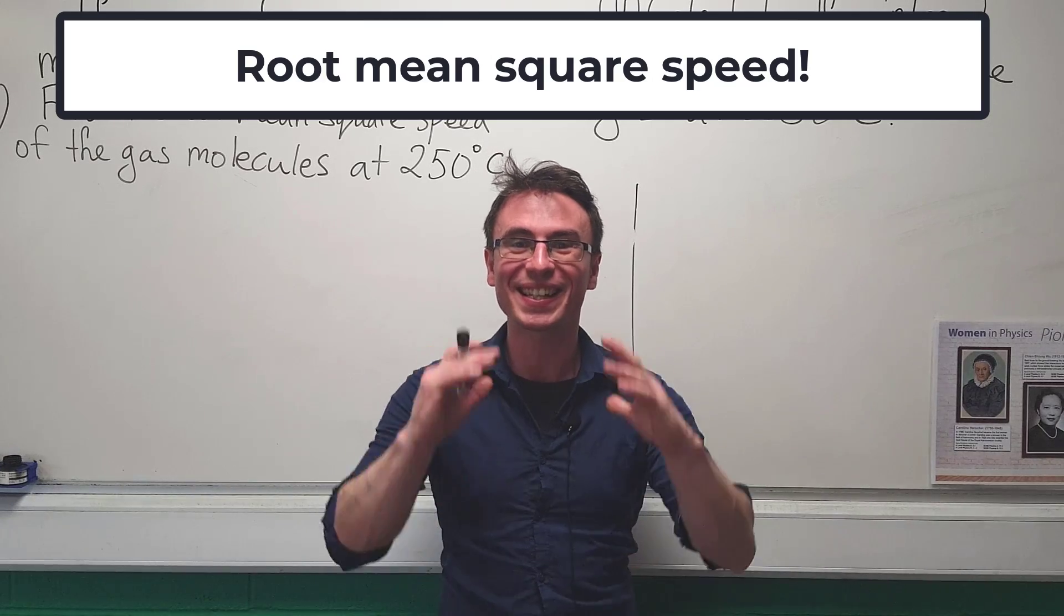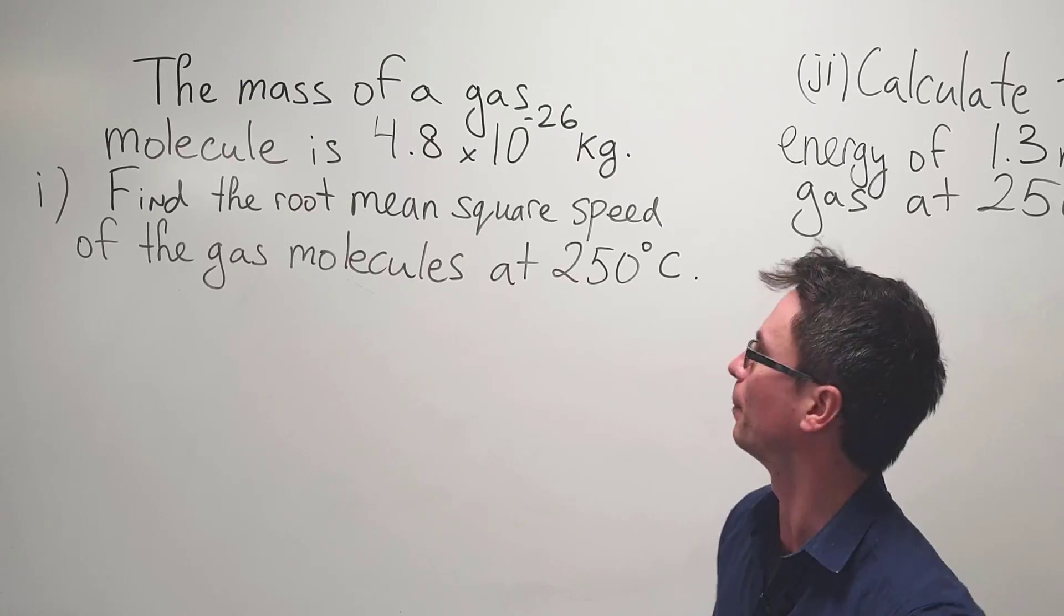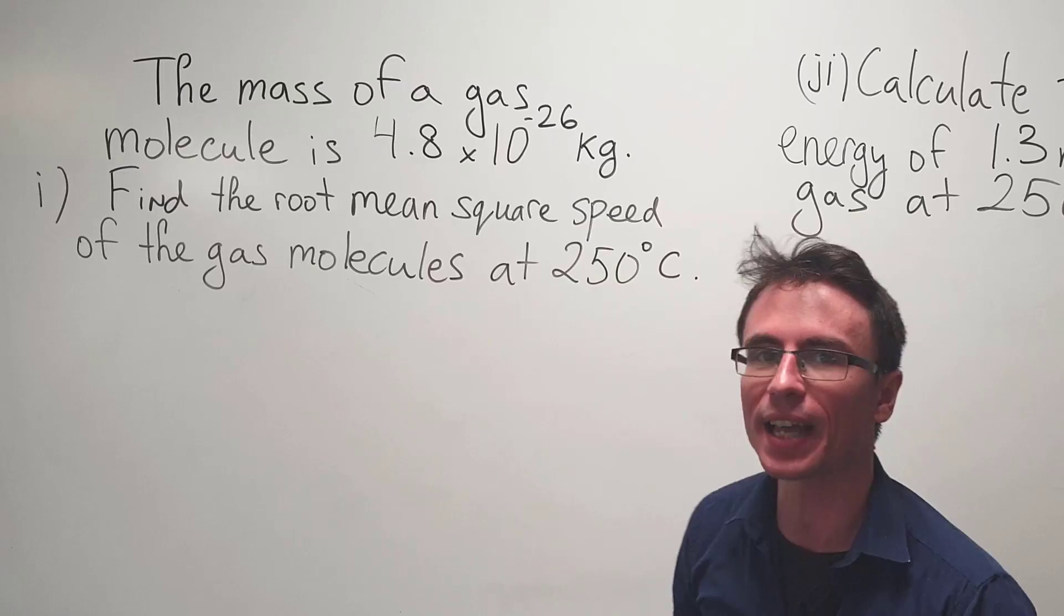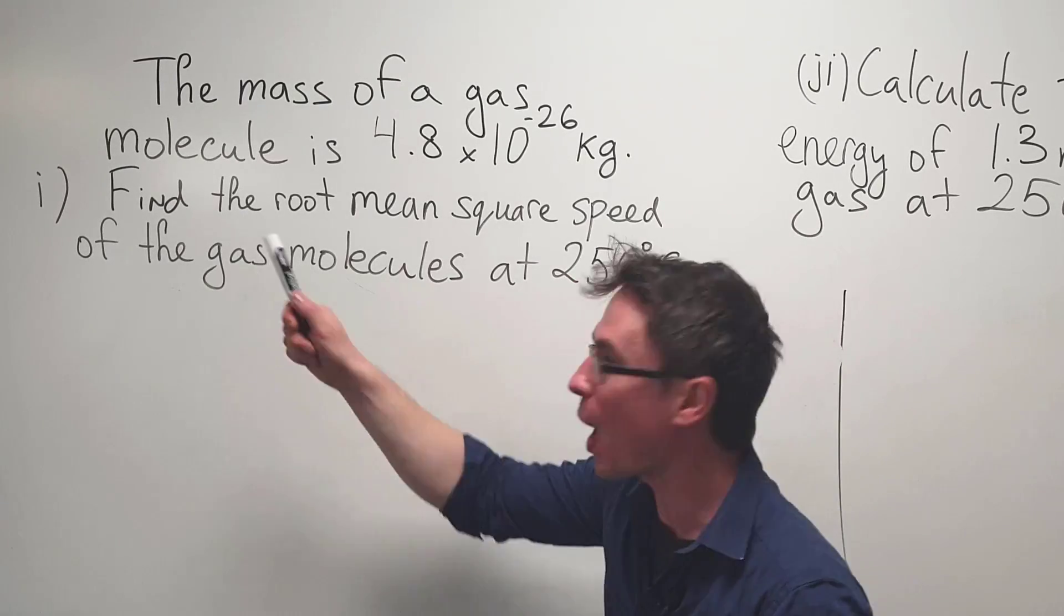The root mean square speed is an extremely common mistake in A-level physics. Have a look at this problem. The mass of a gas molecule is 4.8 times 10 to the power of minus 26 kilograms. Part 1.